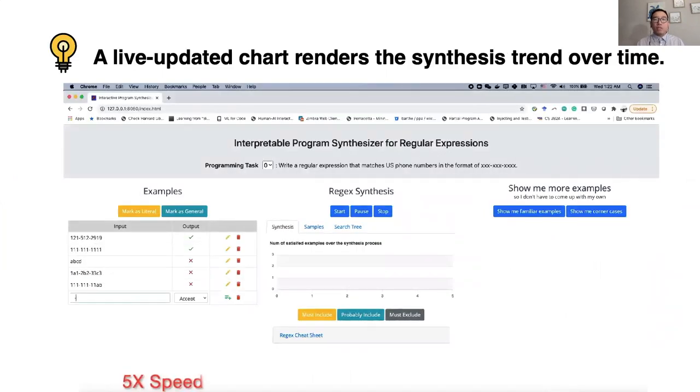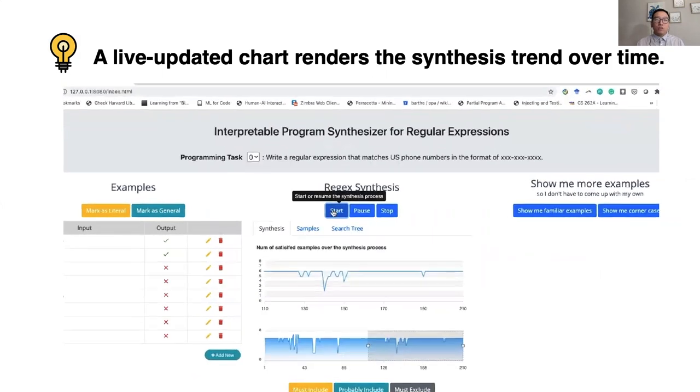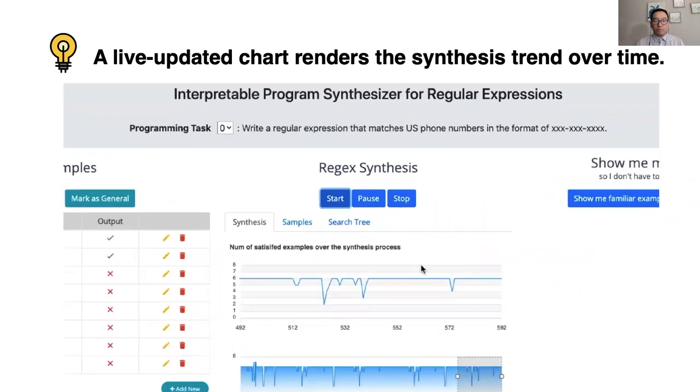After you add some examples and click the start button, you can monitor the synthesis process through a live updated line chart. This line chart shows the speed and the trend of the underlying synthesis process. You can easily find out how many programs have been tried so far and how many examples have been satisfied by each program candidate.